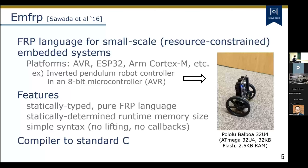Our research group has designed and implemented MFRP, an FRP language for small-scale embedded devices. Through several applications we have shown that FRP is suitable for resource-constrained embedded systems based on microcontrollers such as AVR, ESP32, and ARM Cortex-M3. We can run it even on an 8-bit microcontroller, as shown in the video.